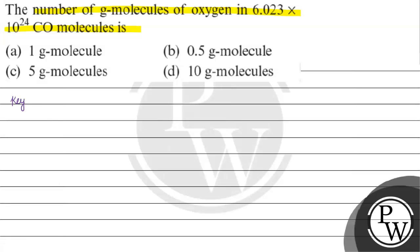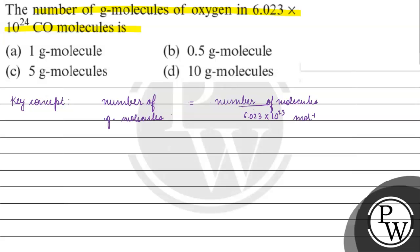The key concept for this question is that the number of gram molecules is basically equal to the number of molecules divided by Avogadro's number, 6.023 × 10²³ mol⁻¹.